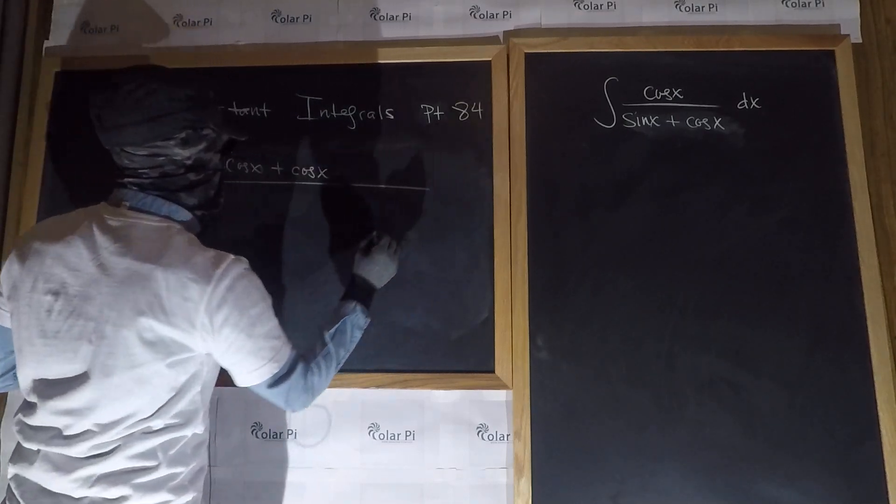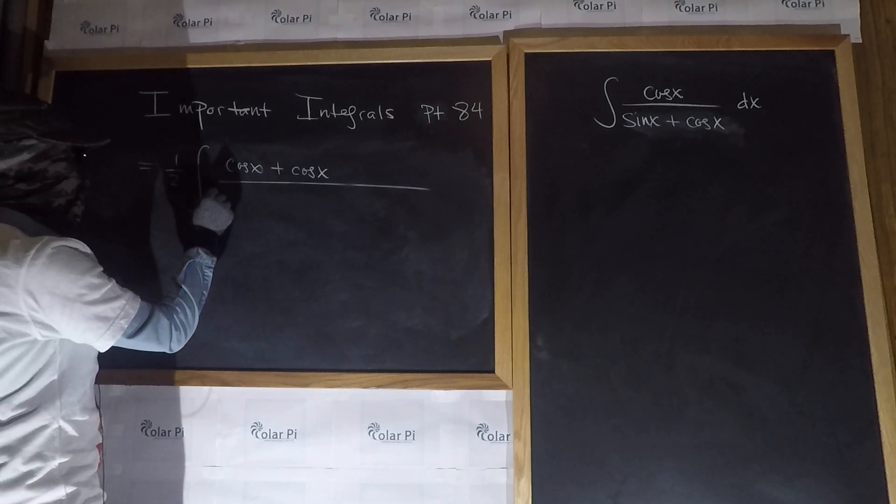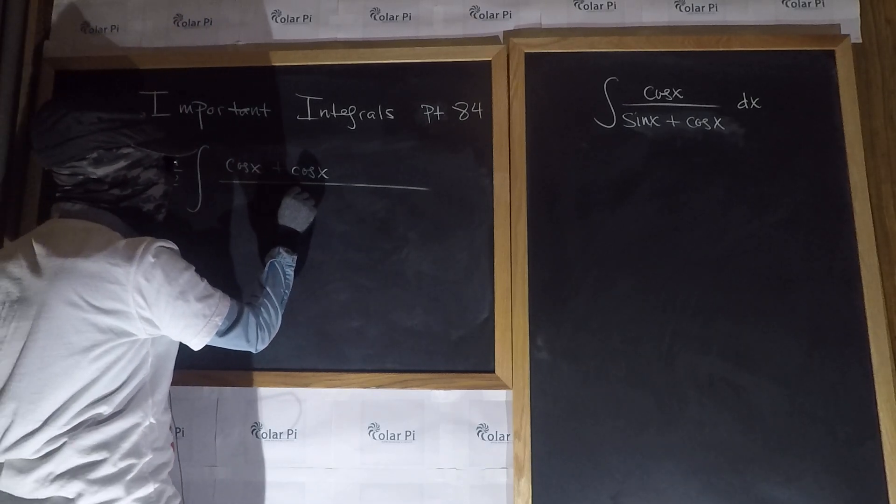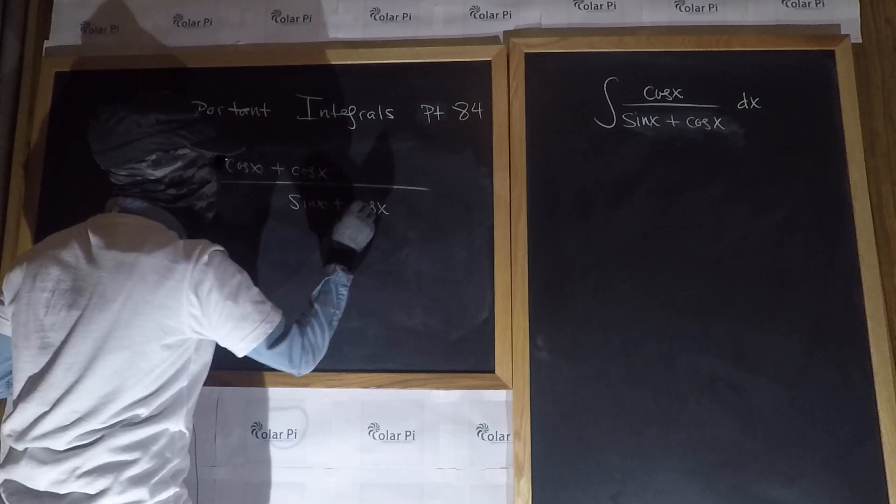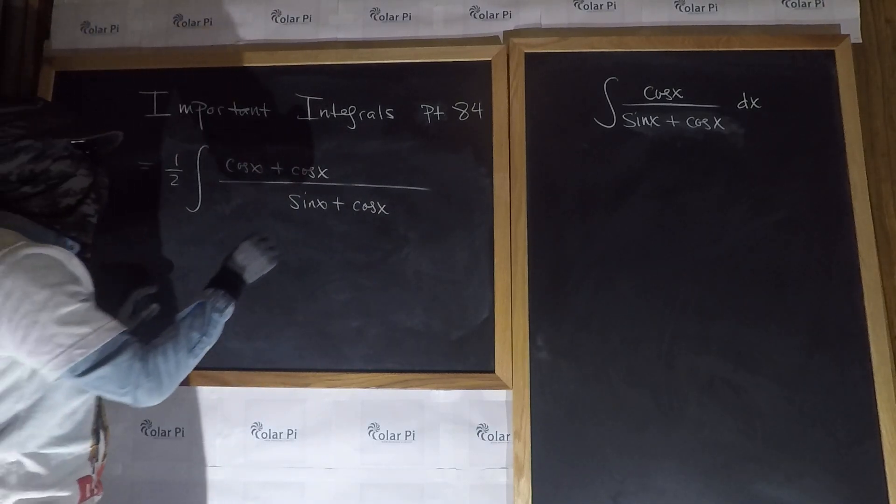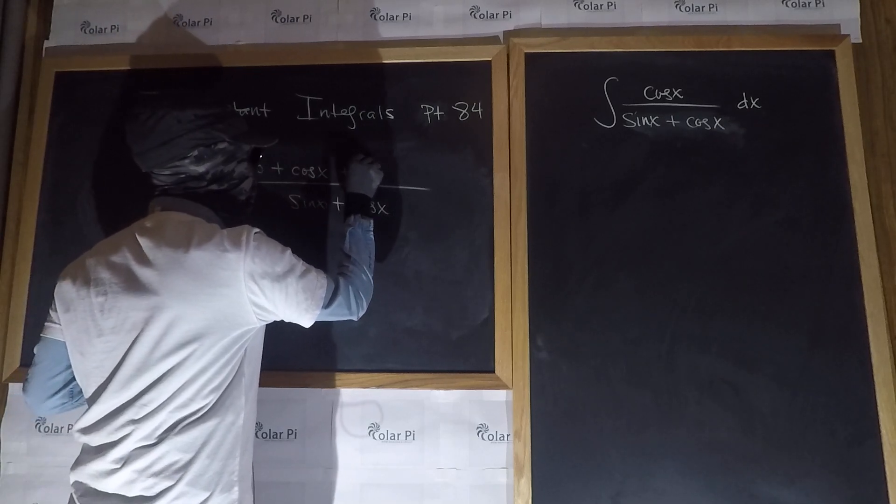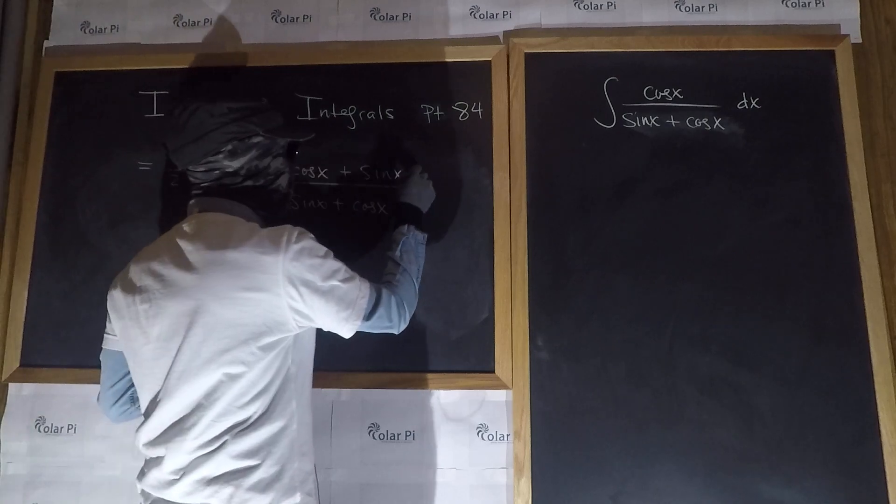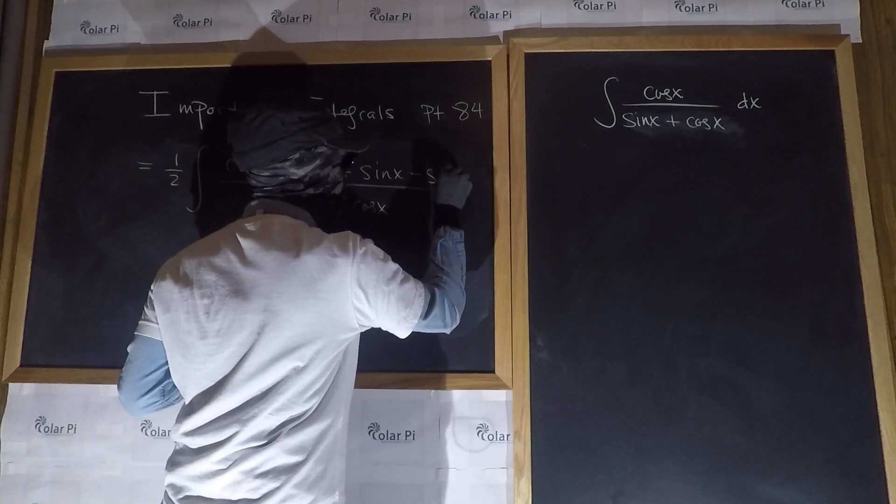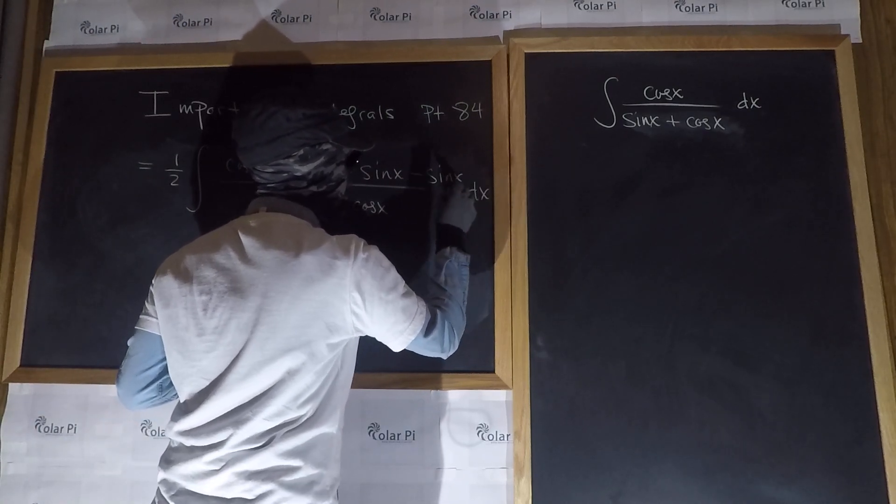Otherwise, the denominator is, let me write it more centered, sin x plus cos x, because I'm going to add stuff to the numerator, and this is what I'm going to add. I'm going to add sin x here, but wait, there is no sin x, so to make out for it, I'll subtract sin x. And then, of course, dx right there.